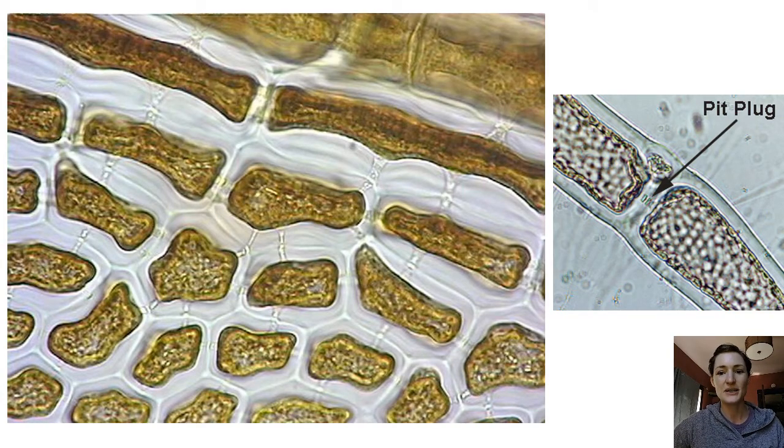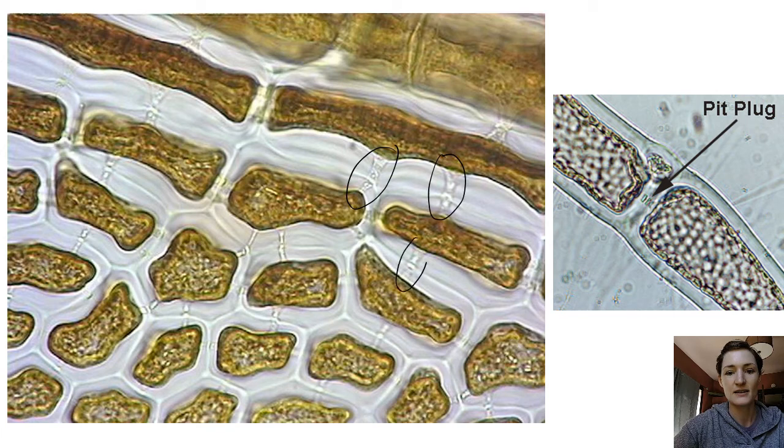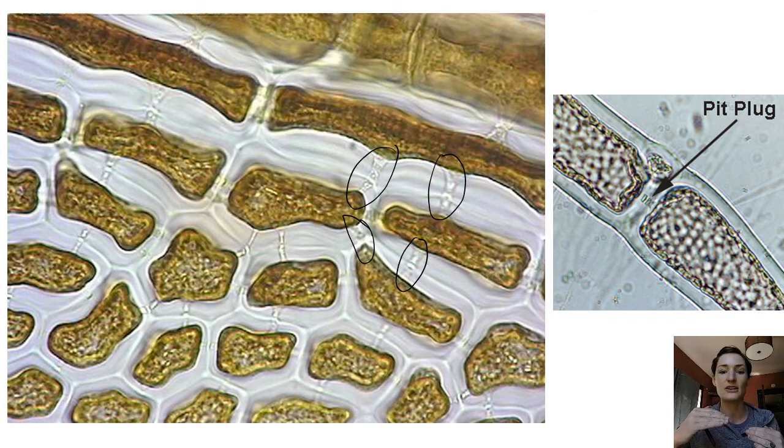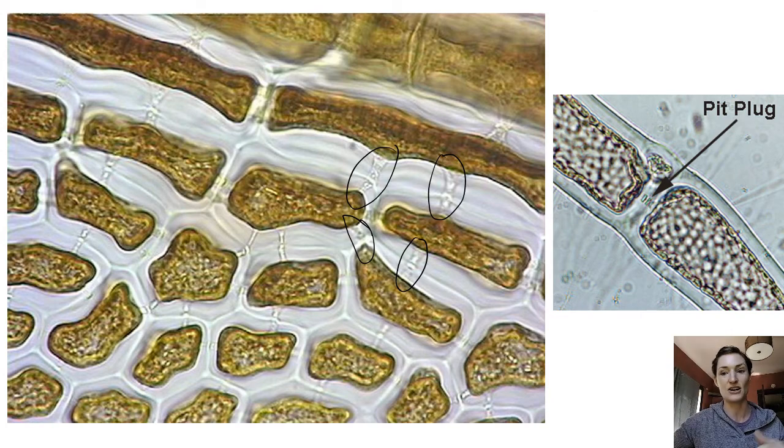This is a picture of some pit connections or pit plugs. You can see them here. These are all connections between adjacent cells, and those can be formed during mitosis with incomplete cytokinesis, or they can be formed after mitosis where two cells meet together, like maybe even two different filaments of red algae, and then they fuse together with these secondary pit connections.